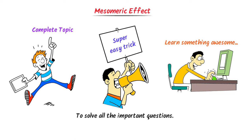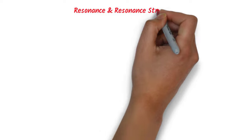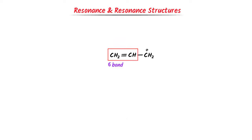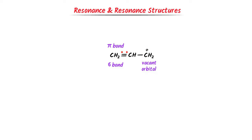To learn mesomeric effect, you must learn the concept of resonance and resonance structures. Let us consider this organic compound. We can see that there is a double bond — we know that one is a sigma bond and another is a pi bond. Now there are pi electrons present in the pi bond. The positive charge on the third carbon means that it has a vacant orbital.